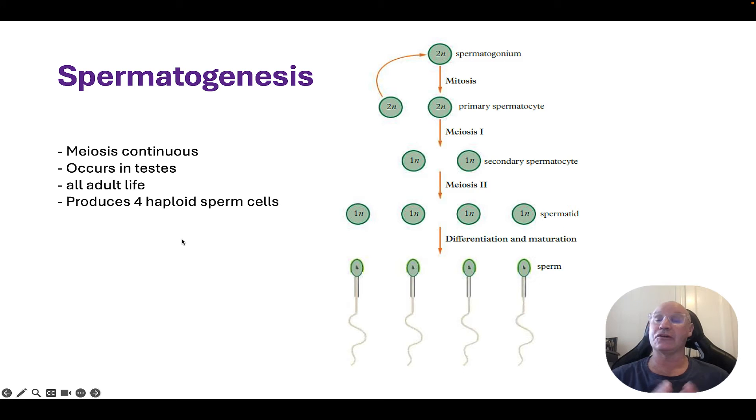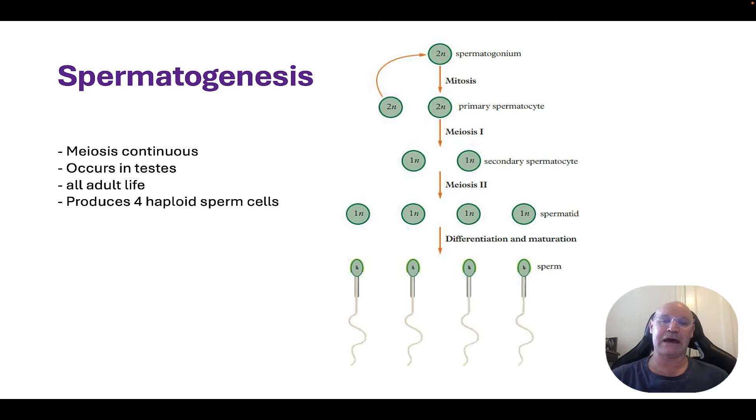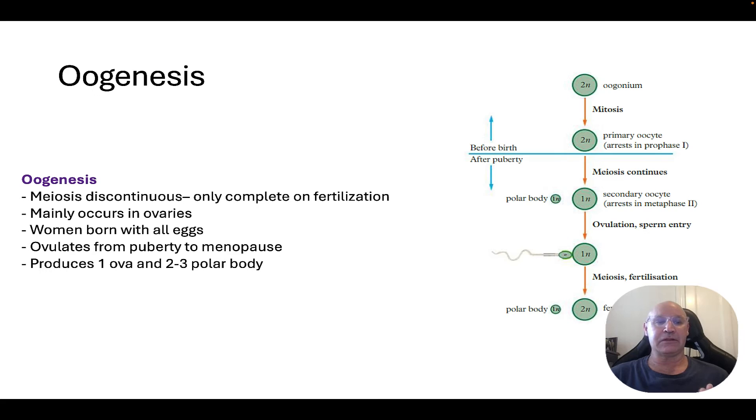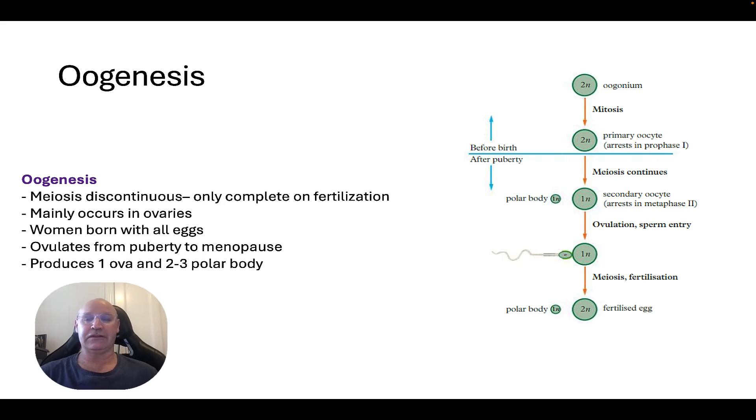Spermatogenesis occurs from puberty for all of an adult male's life. Now let's compare that with oogenesis.